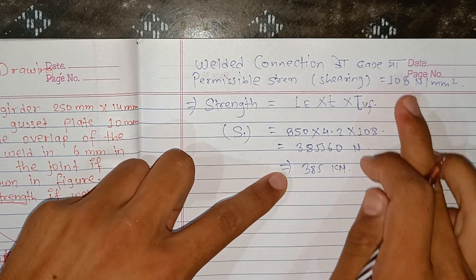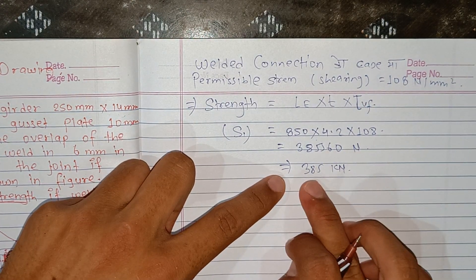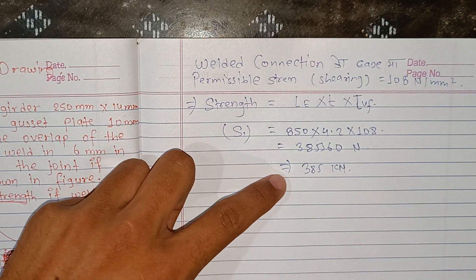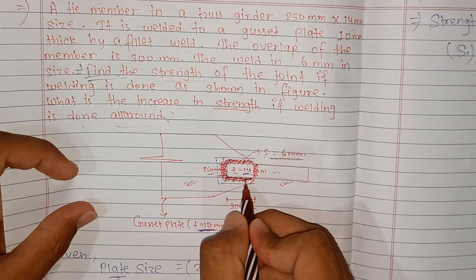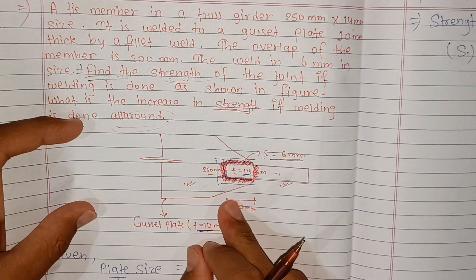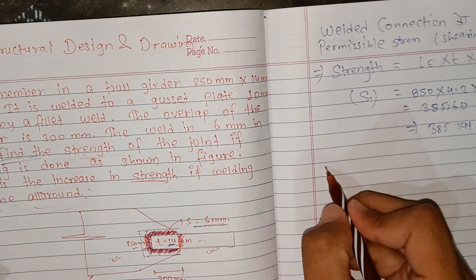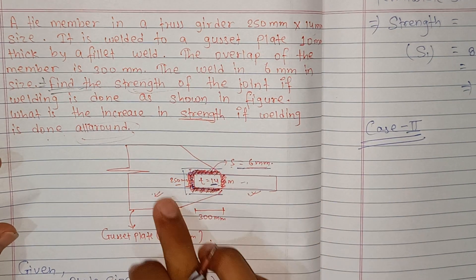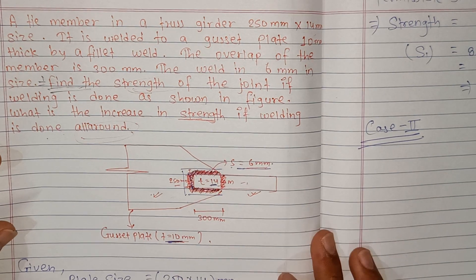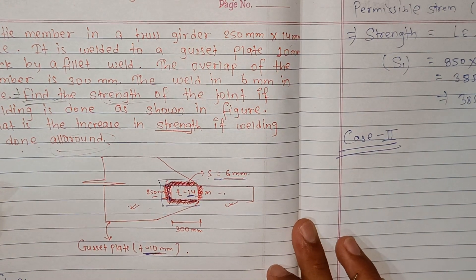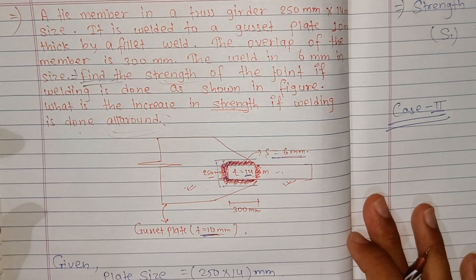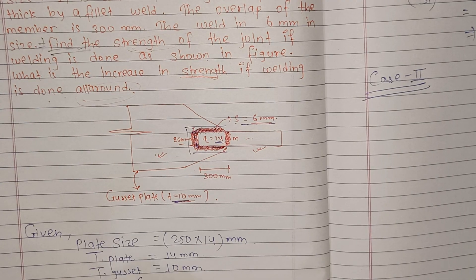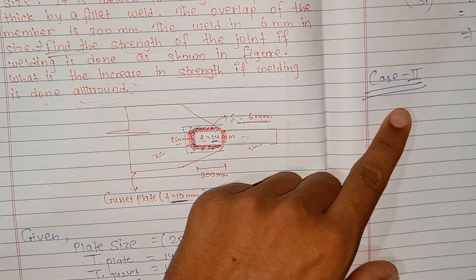So the strength value, divided by 1000, gives the result in kN. Now for the second case, when welding is done all around the plate, we calculate the new effective length and throat thickness similarly.